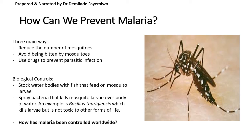There are some concerns about spraying Bacillus thuringiensis — for instance, what would happen if the bacteria acquired a new gene and became pathogenic. On a global scale, malaria control efforts include the distribution of mosquito nets so people can sleep safely without being bitten. Even if mosquitoes are present, nets prevent them from biting and transmitting malaria.